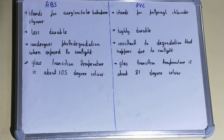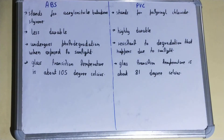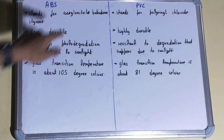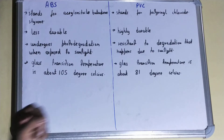In this video I'll be covering the difference between ABS and PVC. ABS stands for Acrylonitrile Butadiene Styrene, whereas PVC stands for Polyvinyl Chloride.